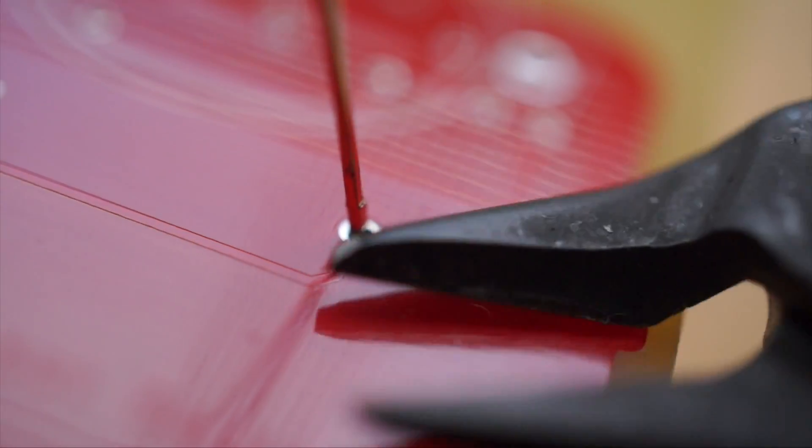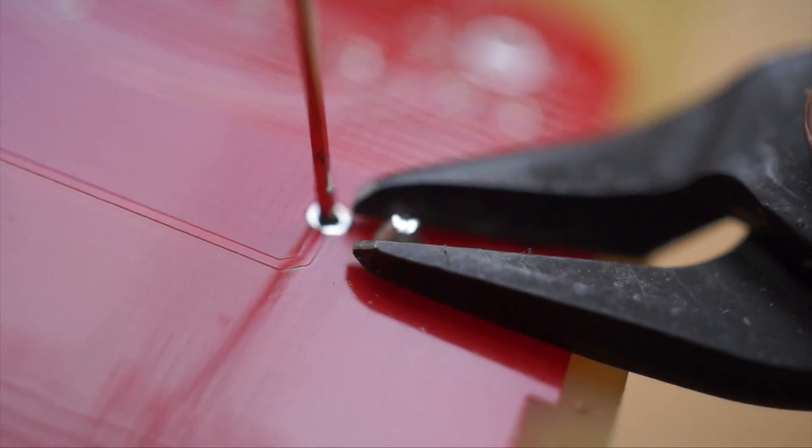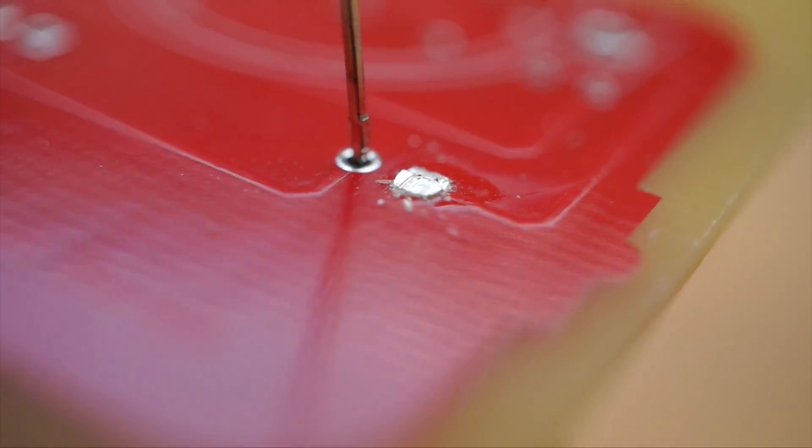Take that same joint you just made and use flush cutters like these five dollar Hakos to trim the joint right down to the board.